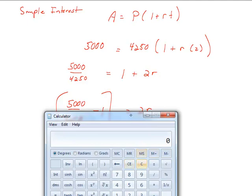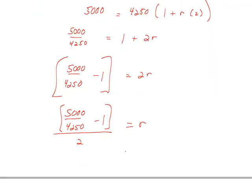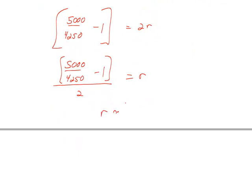So if we bring this into our calculator, I'm going to take $5,000 divided by $4,250. That answer, subtract 1 from it, and then we're going to divide it by 2. So I'm just following the order of operations there. And that tells me that R is 0.08823. So R is approximately 0.08823.